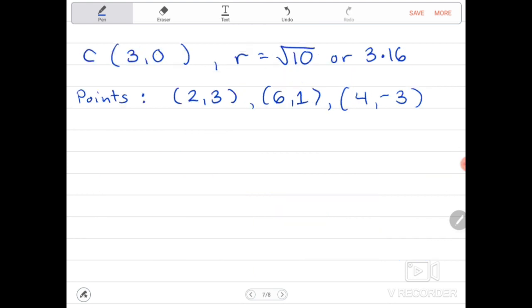With the following information, center which is 3 and 0 and radius equals square root of 10 or 3.16, and the circle passes through the points 2 and 3, 6 and 1, and 4 and negative 3, there are so many conditions. The center will be 3 and 0, the radius is square root of 10 or 3.16, and it should pass through the points 2 and 3, 6 and 1, and 4 and negative 3.